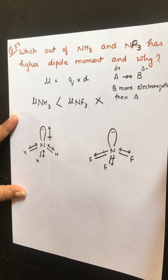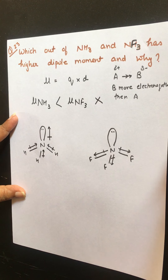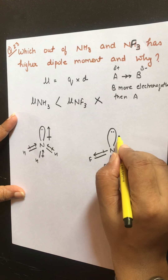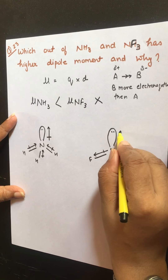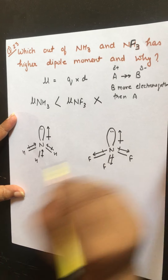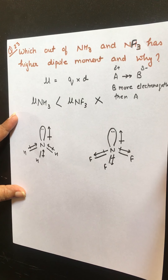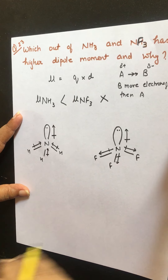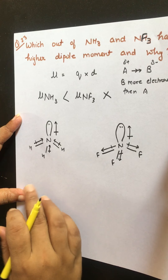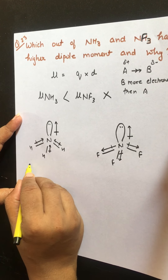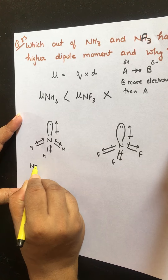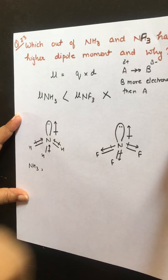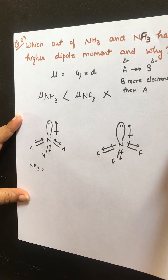In the case of NF₃, fluorine is more electronegative than nitrogen, so the bond dipoles are shown pointing towards fluorine — away from nitrogen. The dipole due to the bond pair is shown in this manner, and the dipole due to the lone pair is shown away from the central atom.